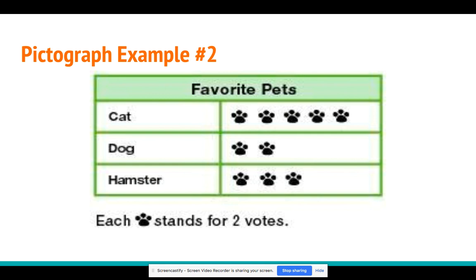How about dog? How many people voted for dog as their favorite pet? Right — four. So we're going to count the two paws: two, four. How about hamster? How many people voted for the hamster? Right — six. Count our paws: two, four, six.